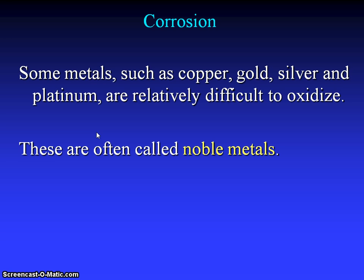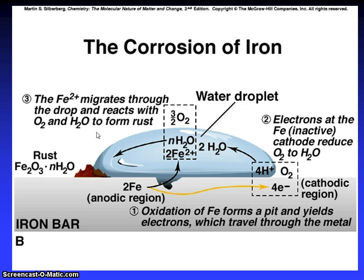What is corrosion? Some metals such as copper, gold, silver and platinum are relatively difficult to oxidize. These are often called noble metals. The corrosion of iron: the Fe2+ migrate through the drop and react with O2 and H2O to form rust. Water droplets, O2. Electrons at the Fe inactive cathode reduce O2 to water. Cathode region. And 2Fe anodic region. Oxidation of Fe forms a pit and yields electrons which travel through the metal. And this is the rust formula: Fe2O3·H2O. This is the iron bar where reactions occur.